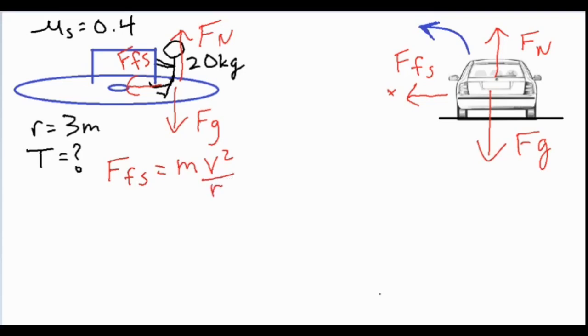But when something is traveling in a circle, the centripetal acceleration is v squared over r, so the force of static friction equals m v squared over r. In the y direction, we have the normal force and the force of gravity, so we know that FN minus Fg equals 0.